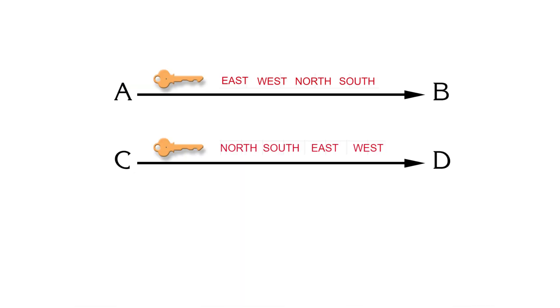East, west, north and south is the encoding and decoding key between A and B and north, south, east, west is the key between C and D.